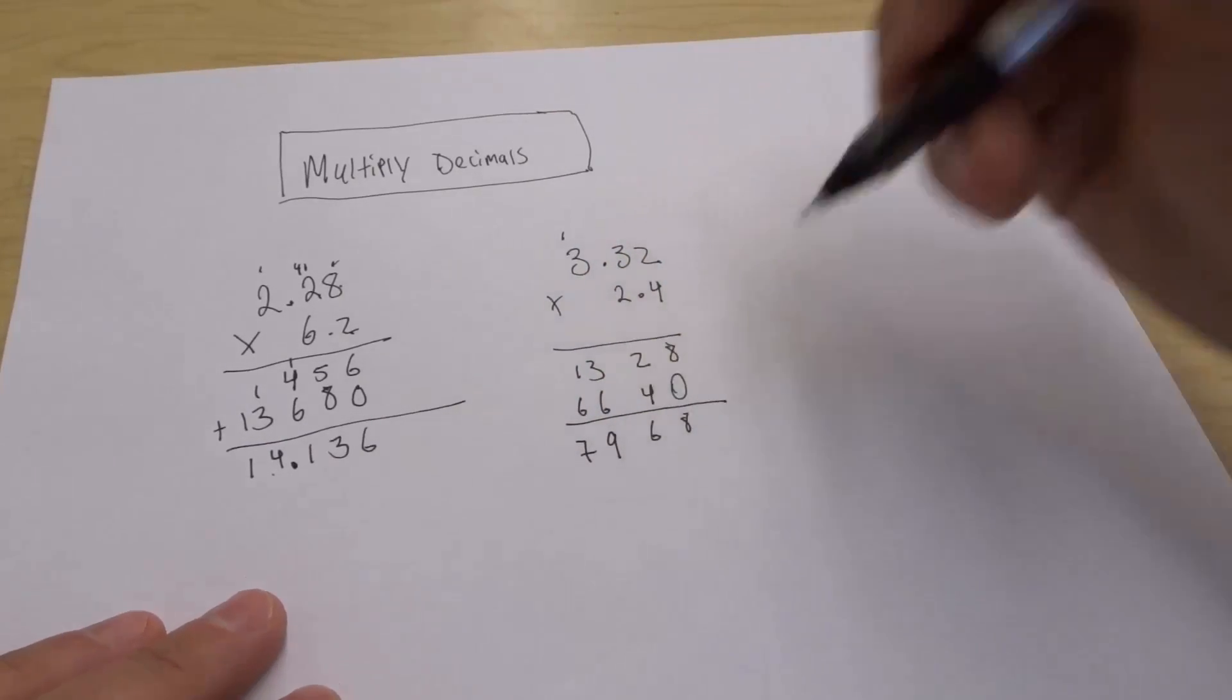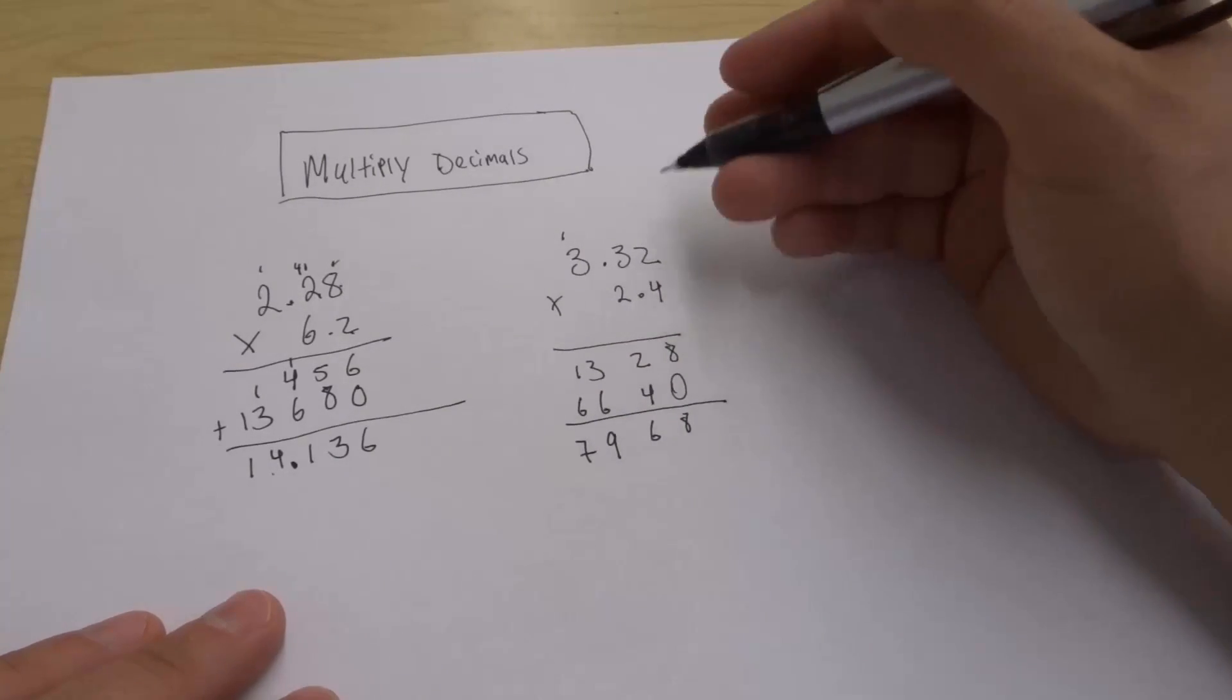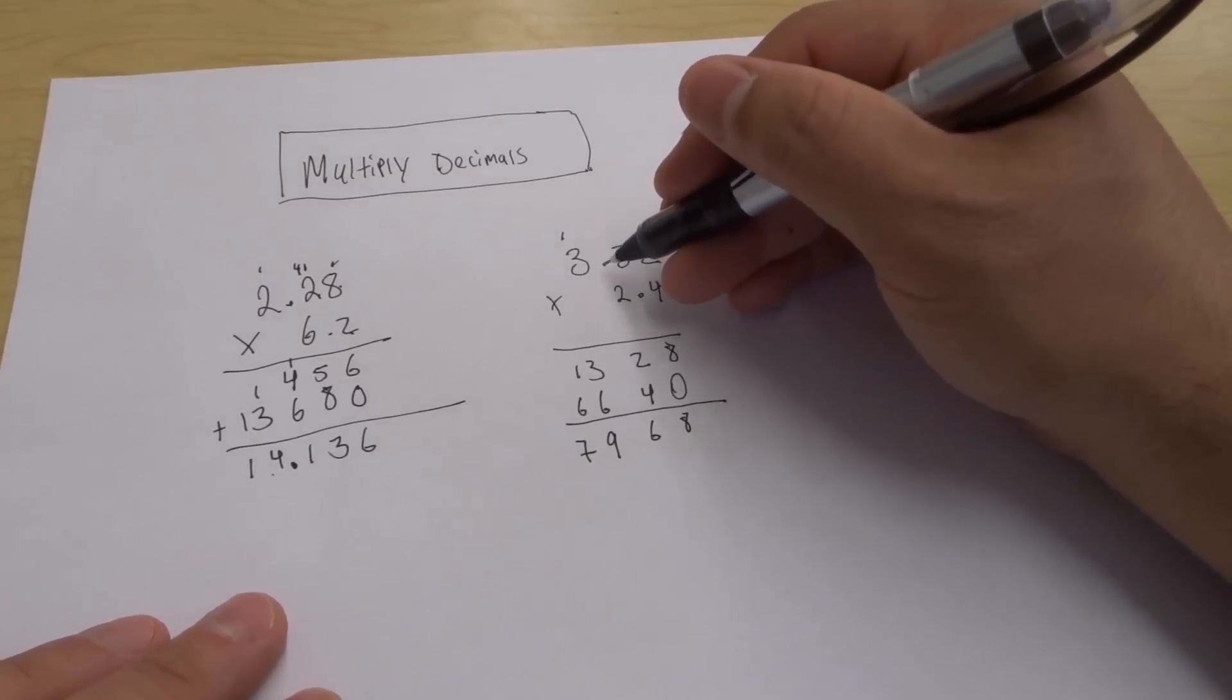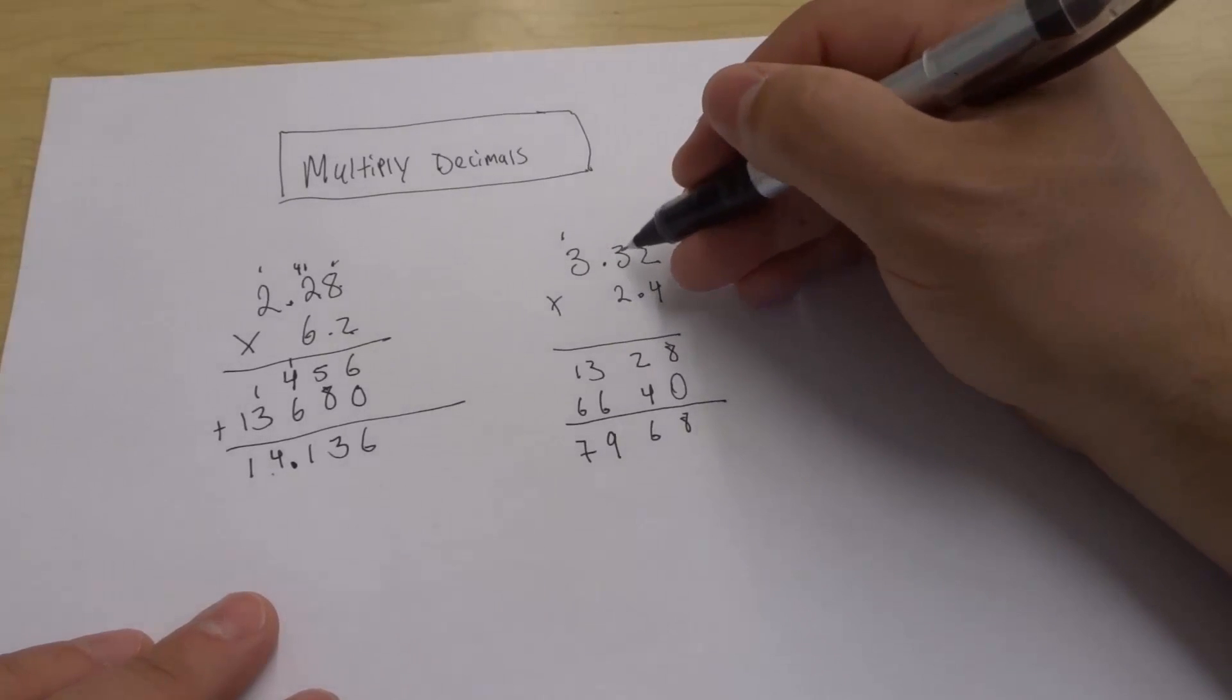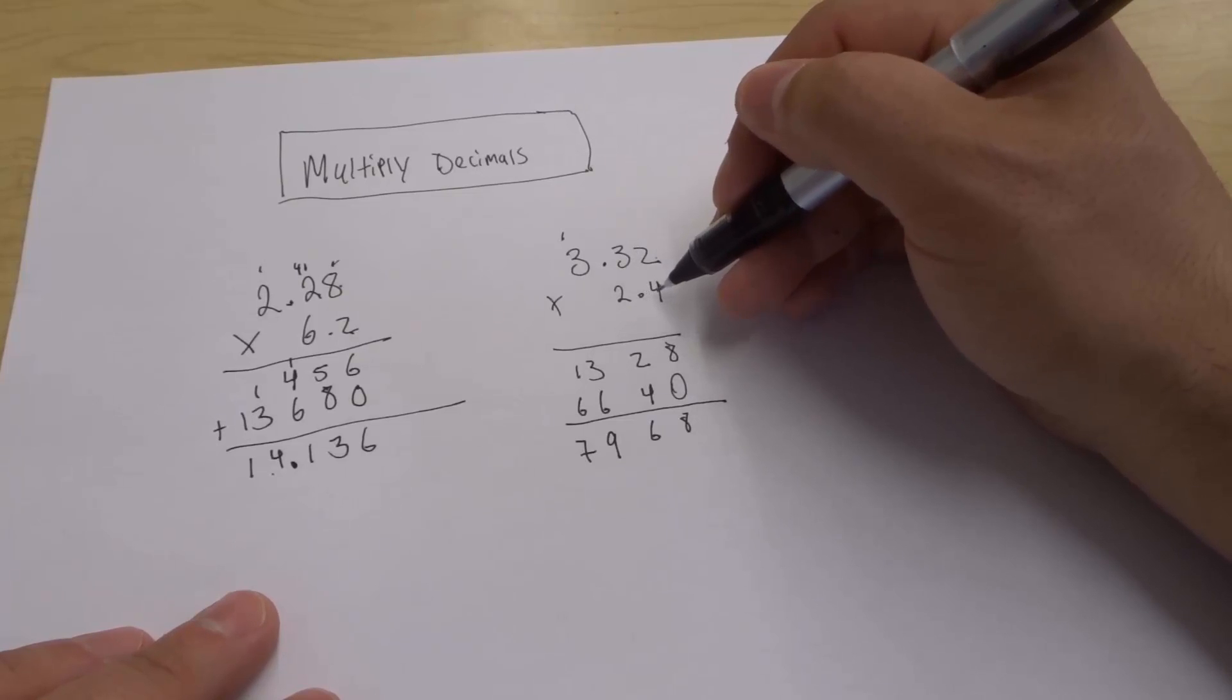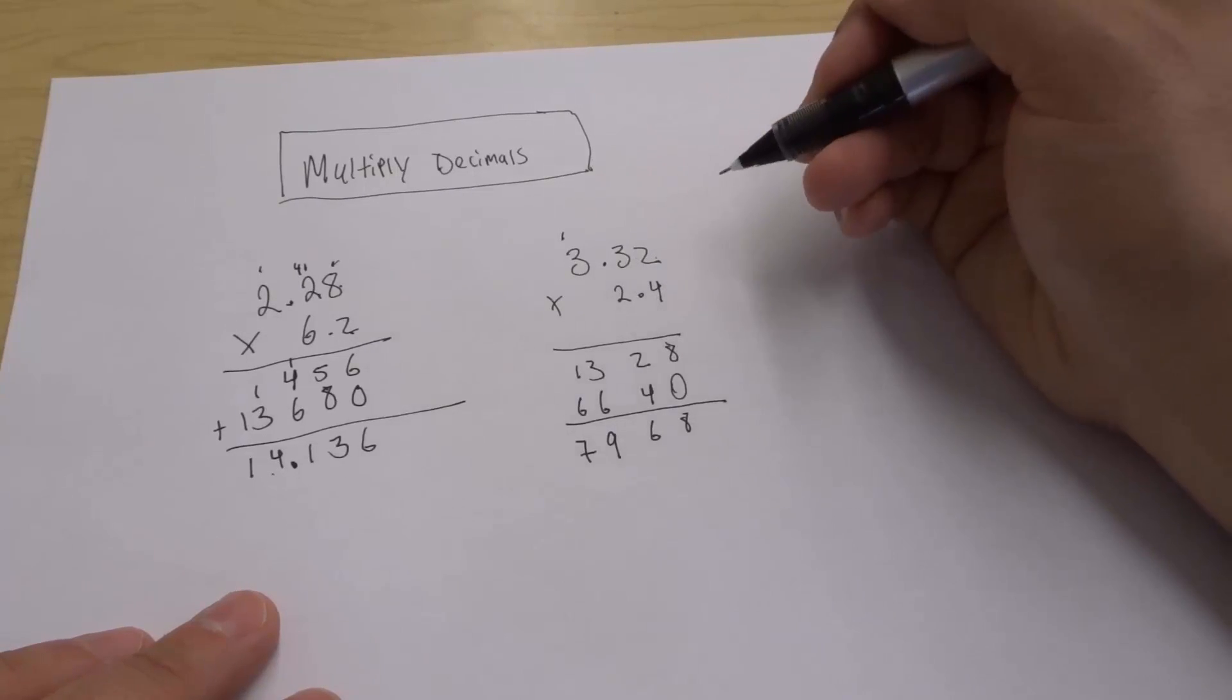Now once again, this number is way too big. 7,968 is way too big of an answer for this, so we need to now incorporate the decimal. We have to figure out how many numbers are to the right of the decimal on the top and bottom number. We have two numbers to the right on the top number, then one number to the right on the bottom number. So 2 plus 1 is 3.